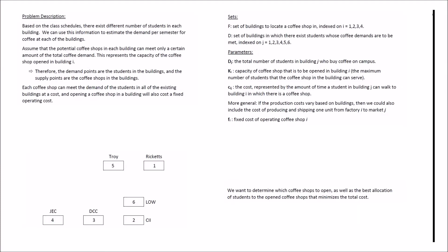This video focuses on the facility location and capacity allocation problem. In such problems we are given a set of supply sources with specified capacities and a set of customers with specified demands. We want to determine which facilities should be open and find the best allocation of supply to customers to minimize cost. In this particular example we are going to determine where to locate our coffee shops and how to allocate the supply to meet the coffee demand of the students at RPR campus.